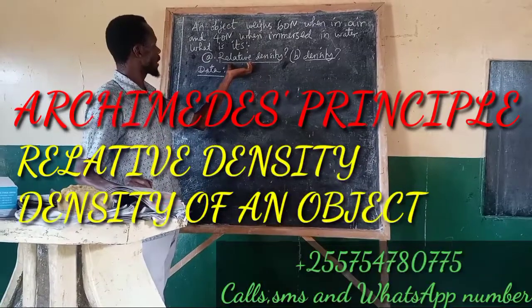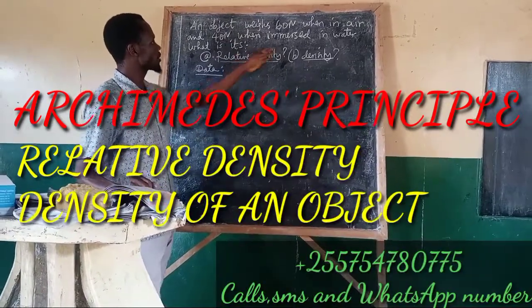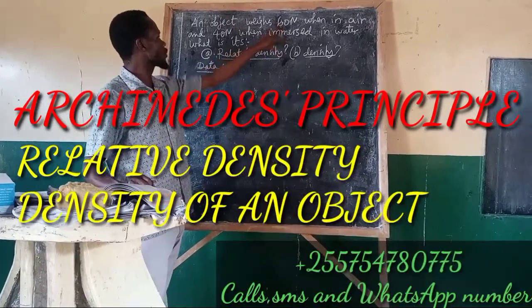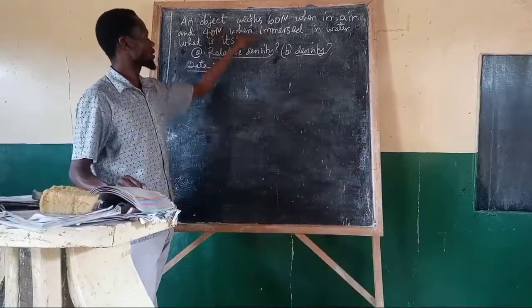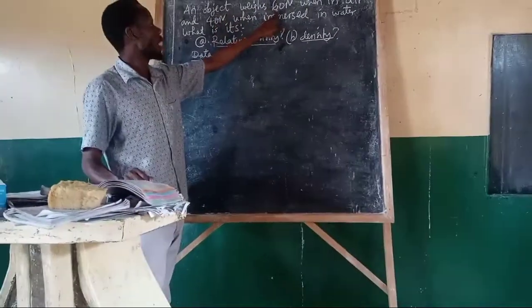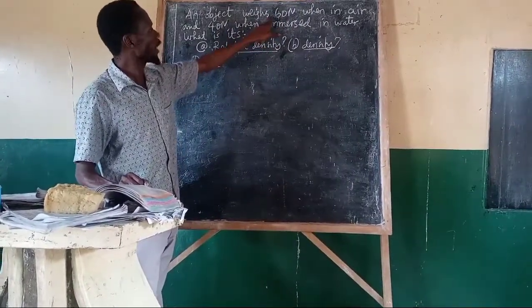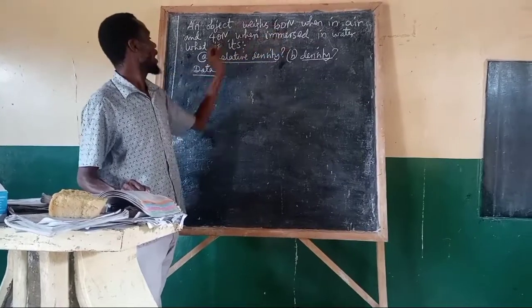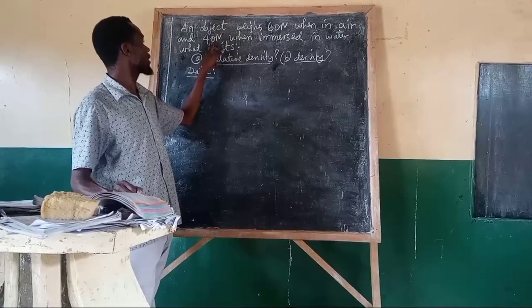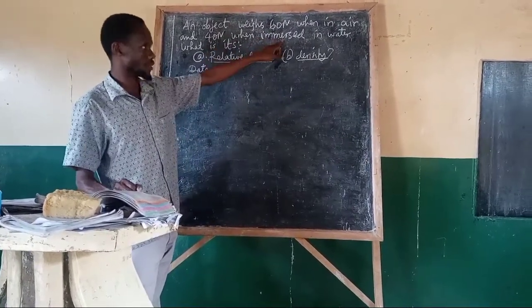If you want to determine relative density by using Archimedes' principle, you are given factors: one of them is weight of an object in air, and the second is weight of an object in liquid.